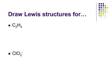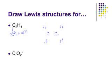Practice here is really important. Let's look at C2H4. We'll put the carbons in the middle and the hydrogens outside. We have two carbons, each with four valence electrons, and we have four hydrogens, each with one valence electron, so that's H plus four. We have 12 electrons here total.